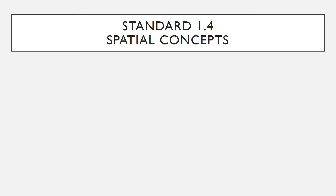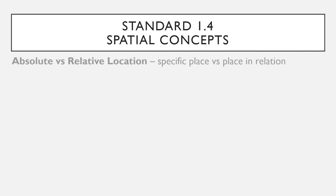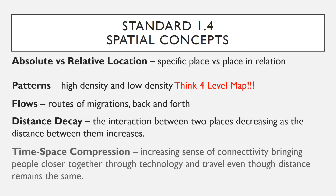This is probably the biggest catch-all for the class — standard 1.4, spatial concepts and how we think spatially. The key terms include absolute location, relative location, patterns, flows, distance decay, and time-space compression. These are all ways we think spatially. We think about a space, we have ideas about that space, and these are just different ways we can read spatial concepts.